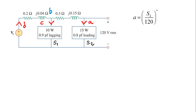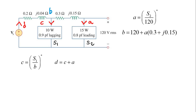In equations: current A equals the complex conjugate of S2 divided by 120. Voltage B equals 120 plus the drop that current A produces in impedance 0.3 + j0.15. Current C equals the complex conjugate of S1 divided by B. Current D equals the sum of A and C. That current D produces a voltage drop in 0.2 + j0.04, which added to B gives the source voltage. With the source voltage and current D, we compute the power delivered by the source.